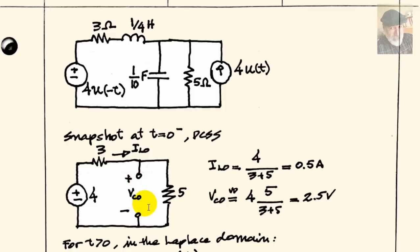And capacitors, they behave as open circuits. That's why the capacitor has become this open circuit. In this circuit, in this snapshot, we will compute the initial current in the inductor, IL0, and the initial voltage in the capacitor, VC0, with that polarity and that direction. That current IL0 is 4 divided by 3 in series with 5, half an amp. And VC0 is given by a voltage divider, 4 times 5 divided by 3 plus 5, that is 2 and a half volts. We have the initial conditions of this circuit.